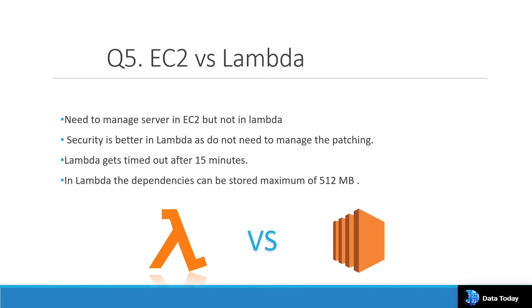Lambda times out at 15 minutes, and dependencies can be stored up to a maximum of 512 MB. In EC2, various storage options are available, so you can have a flexible amount of memory as per your requirement — much more than Lambda.